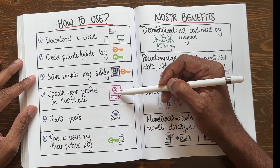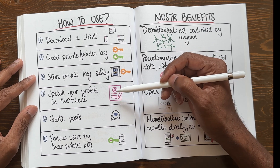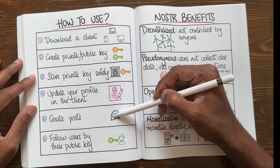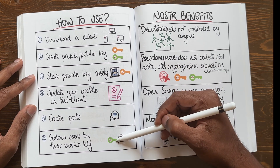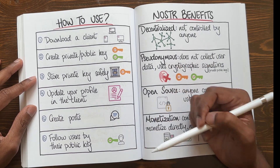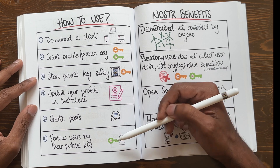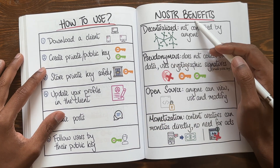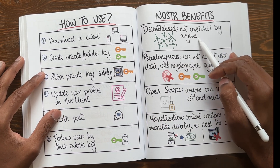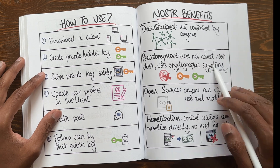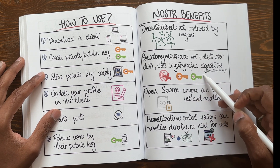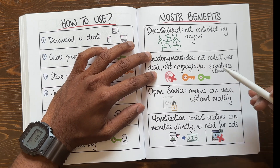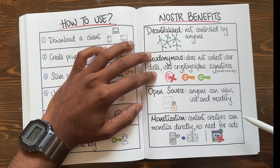Update your profile — add a display picture, add a bio, and so on. Start creating posts, and then you can follow users by their public key. It's shown as a QR code, so it's super easy to add someone. Benefits of Nostr include that it's decentralized, not controlled by anyone, and pseudonymous. It does not collect user data and uses cryptographic signatures — private key and public key — to send information.